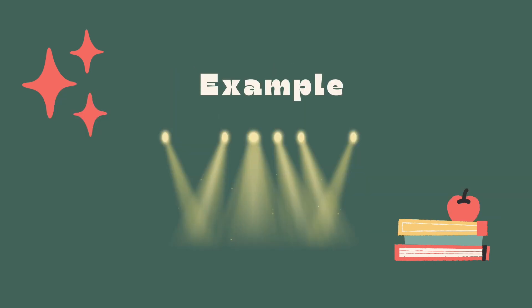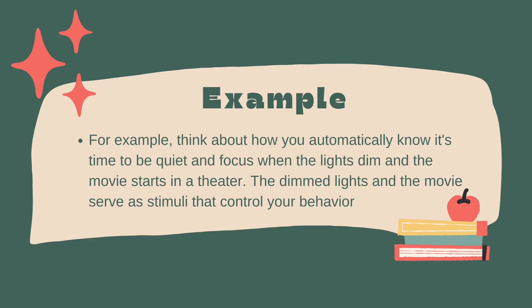For example, think about how you automatically know it's time to be quiet and focus when the lights dim and the movie starts in a theater. The dim lights and the movie serve as stimuli that control your behavior. Stimulus control is all around us. It can be found in our routines, habits, and social interactions. Understanding it can help us modify our behaviors and make positive changes.